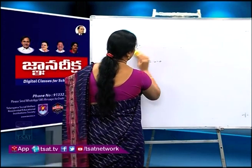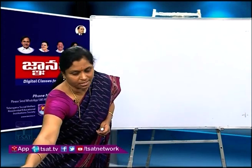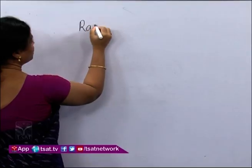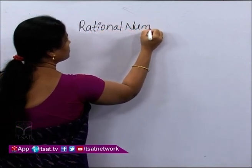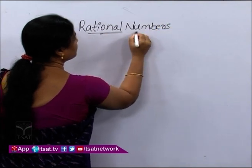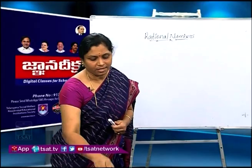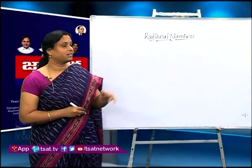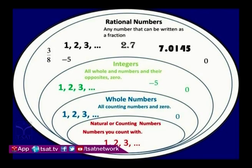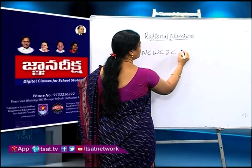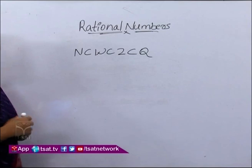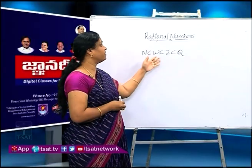Now, today we are going to learn about rational numbers. If you see the slide, rational numbers include integers. Integers include whole numbers, whole numbers include natural numbers. That means natural numbers are a subset of whole numbers, whole numbers are a subset of integers, and integers are a subset of rational numbers. The letter is Q.